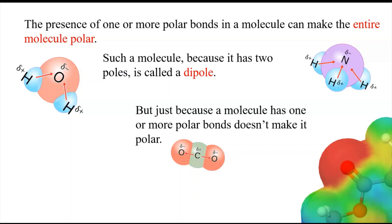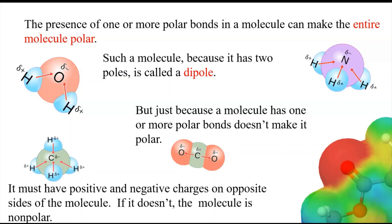But it's also important to note that just because the molecule has one or more polar bonds, it doesn't make it polar. You can see here that you've got a more electronegative oxygen on each end and a carbon in the middle. But you don't have an electronegative atom on one end and not as electronegative on the other end. So you have to have positive and negative charges on opposite sides of the molecule. If it doesn't, the molecule is non-polar.